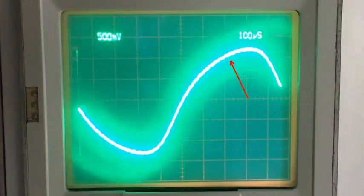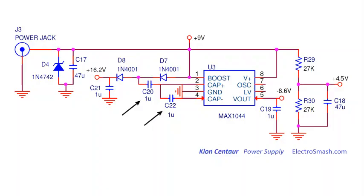Finally, a note about charge pumps and noise. These are very harsh circuits that dump a ton of noise onto power supply rails, which often shows up in the output. Here's a little secret: you can quiet these supplies down by adding a 10-ohm resistor in series with the two flying capacitors. Bam!